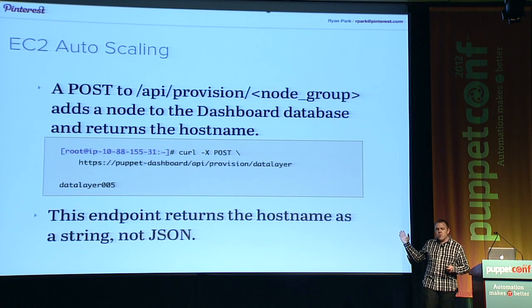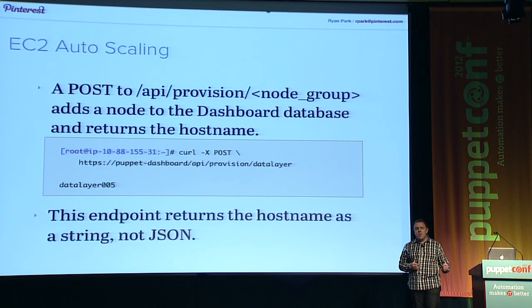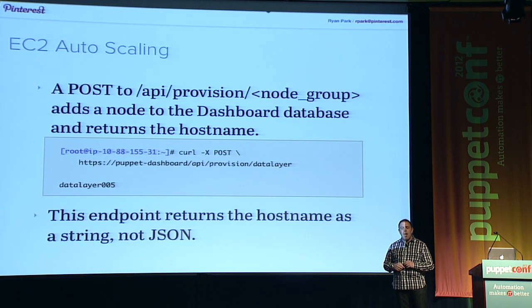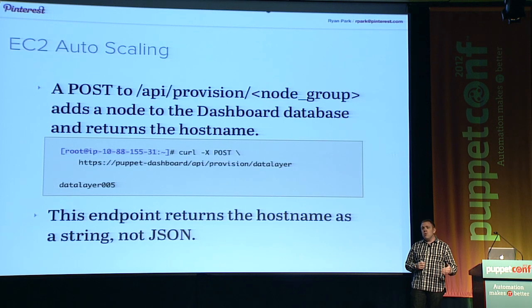If we send a POST request to the slash API slash provision endpoint, it will add a node to the Dashboard database and return the host name. With autoscaling, you don't know host names in advance — you don't know if it's going to be app080 or app081. You just know it's going to be in the app group. So we ask the Puppet Dashboard to create a new host in that app group and give us back a name, something like app081 or data-layer-005. Once it returns that name, we use it, and when we connect to Puppet with that host name, the Dashboard provides the right configuration because the node has been provisioned through this POST command.